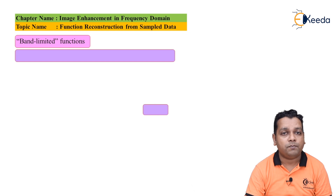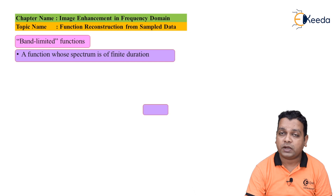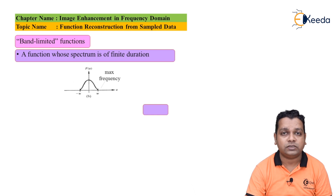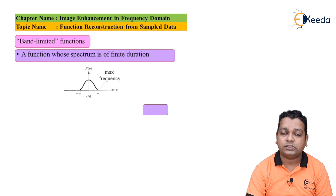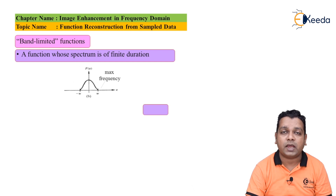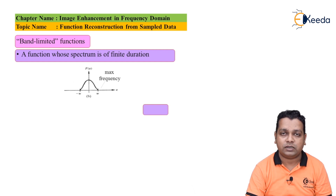This brings us to band-limited functions. A function whose spectrum is of finite duration is called a band-limited function. Graphically, we plot the frequency domain parameter u on the horizontal axis and the function F(u) on the vertical axis. The curve extends from minus W to plus W, representing the maximum frequency. Whatever information exists is in the range minus W to plus W — not beyond — hence the term band-limited.